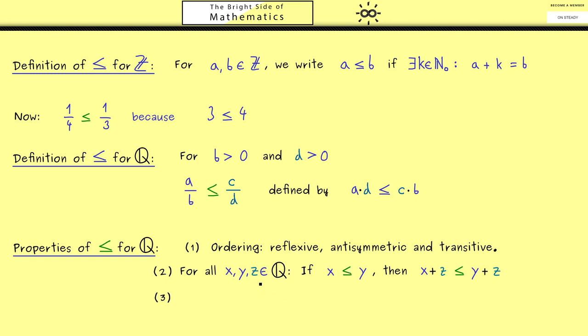Therefore, the next question would be, do we have the same for the multiplication? In fact, we can write down the property in the same sense. If x is less or equal than y, we can multiply with a rational number on both sides and we don't change the ordering. However, this only holds if z is positive. Otherwise, we would flip the ordering. So this is the property that tells us that the ordering and the multiplication are compatible.